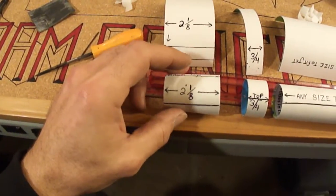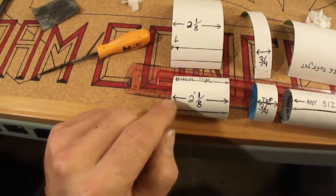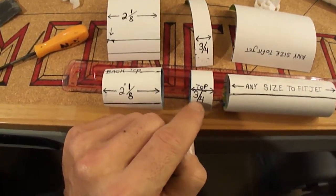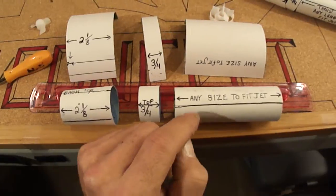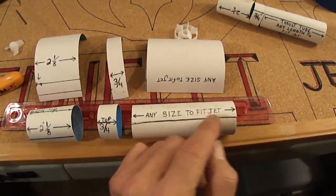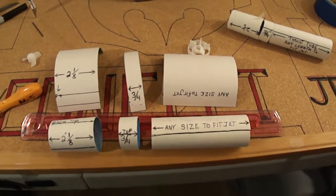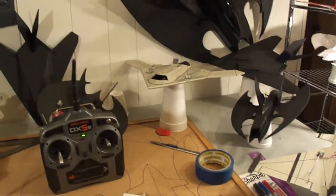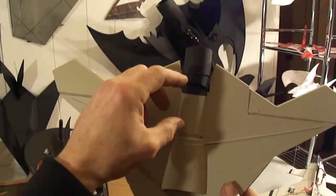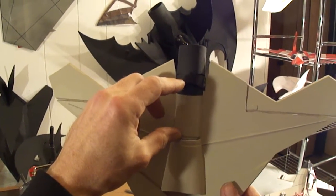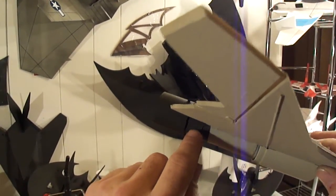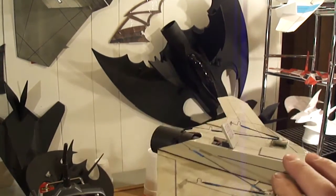So again, your thrust vector nozzle is two and an eighth from back to front. Your connector center piece is three quarters of an inch from back to front. And then your thrust tube itself is going to be whatever size you want it to be to fit your jet, whatever length you're going to be wanting it. Like on the X-47 here, this thrust tube is fairly short. Here you can see I got the center piece and the thrust vector nozzle on the back of it.